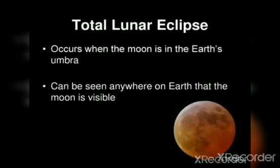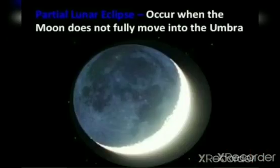What is total lunar eclipse? Total lunar eclipse occurs when the moon is in the earth's umbra. It can be seen anywhere on the earth where the moon is visible. Partial lunar eclipse occurs when the moon does not fully move into the umbra region of the earth.